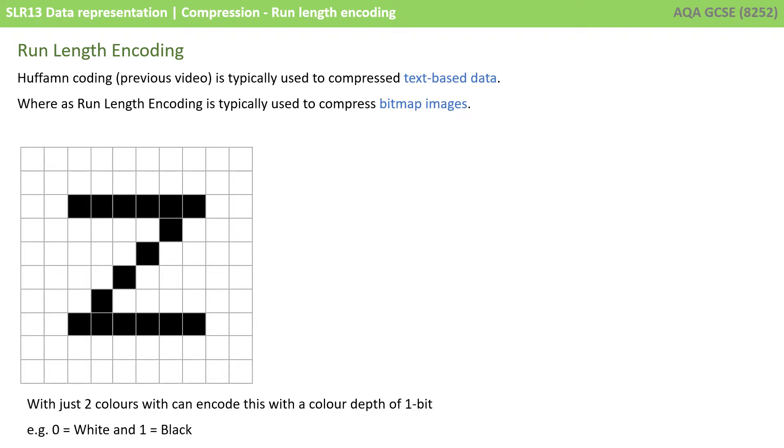We're going to start with a simple black and white bitmap image shown on the screen here. As we know from a previous video, with just two colours, we can encode this image with a colour depth of one bit.